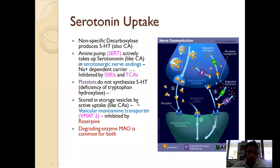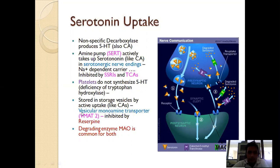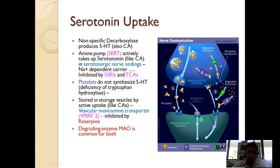The re-uptake into storage vesicles is inhibited by reserpine, a drug obtained from plant sources. Reserpine belongs to the selective serotonin re-uptake inhibitors (SSRIs) and is given to prevent re-uptake of serotonin. It is used for the treatment of depression — increasing the quantity of serotonin elevates mood and helps the patient come out of depression.